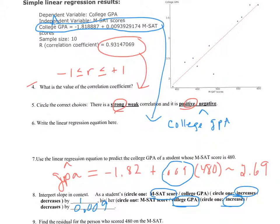Equivalently, we could say that as math SAT scores increase by, let's say, 100 points, because that's more meaningful, then college GPA will increase by about 0.009 points.